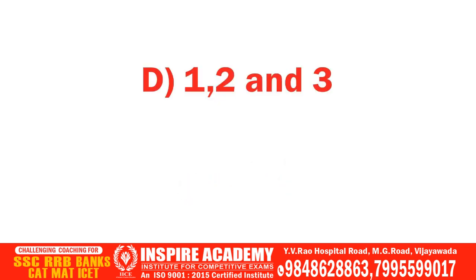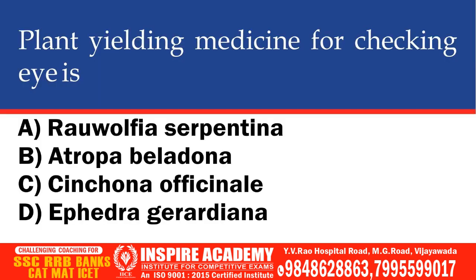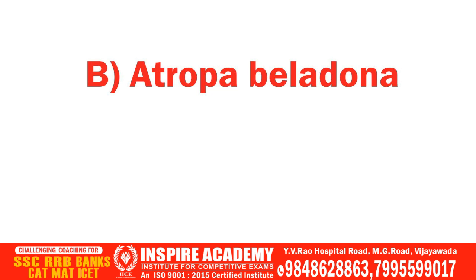Which means Camphor, Chicory, Vanilla are all other plant products. Plant yielding medicine for checking eye disease is which of the following? Options: Rauwolfia serpentina, Atropa belladona, Cinchona officinale, Ephedra gerardiana. The correct option is Atropa belladona.